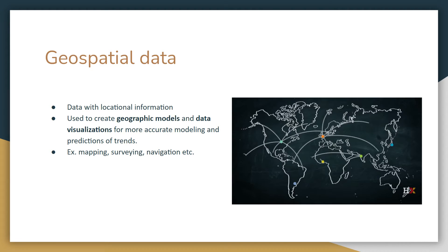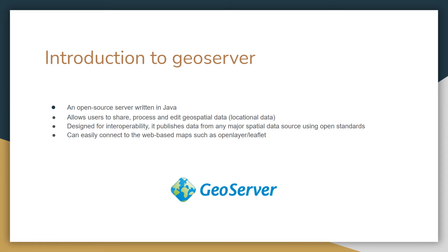Mapping, surveying, and navigation are examples of geospatial data. GeoServer is an open source server written in Java. It allows users to share, process, and edit geospatial data. It's designed for interoperability and publishes data from any major spatial data source using open standards like WMS and WFS. It can easily connect to web-based maps such as OpenLayers and Leaflet, which are JavaScript libraries.